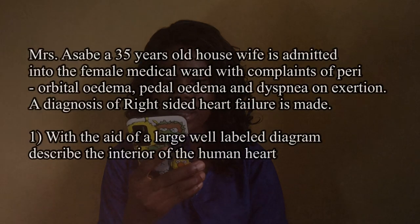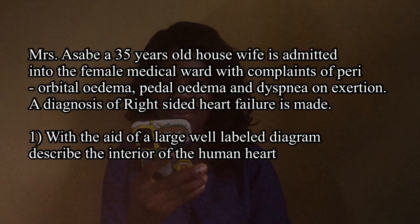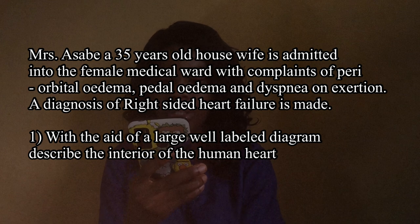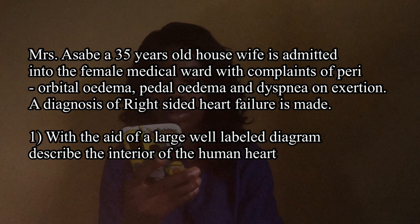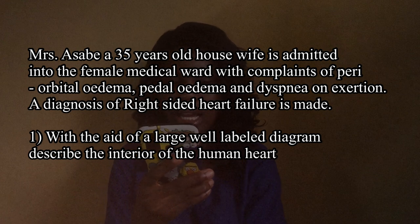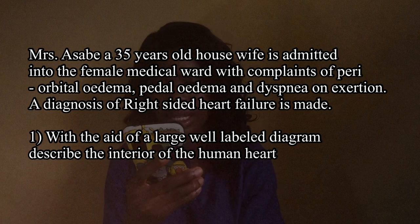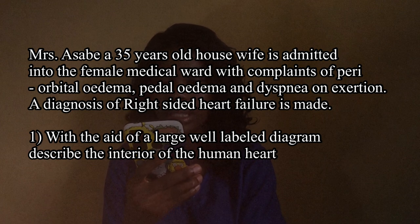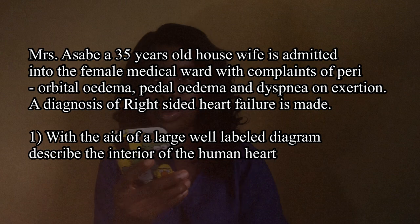First I'm going to be solving Paper Two. This is Paper Two, Question One. The question is: Mrs. Asabi, a 35-year-old housewife, is admitted into the female medical ward with complaints of periorbital oedema, pedal oedema, and dyspnea on exertion. A diagnosis of right-sided heart failure is made. Question 1a: with the aid of a large well-labeled diagram, describe the interior of the human heart.